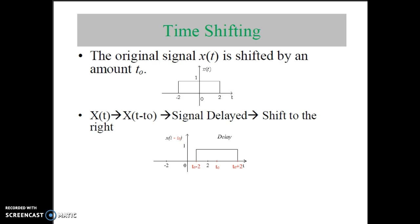If we consider x(t) as the original signal and x(t minus t0) as the shifted version, t0 represents the delay by which the original signal gets shifted. As shown in the figure, the original signal is from minus 2 to plus 2. If we shift this signal by t0, then the minus 2 time instant gets shifted to t0 minus 2, and the plus 2 time instant gets shifted to t0 plus 2. This is called time shifting.